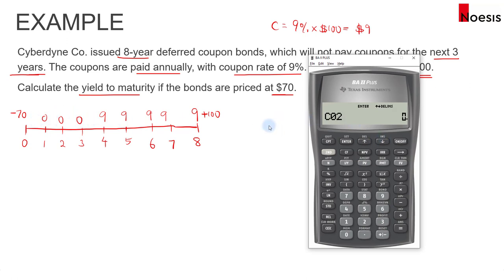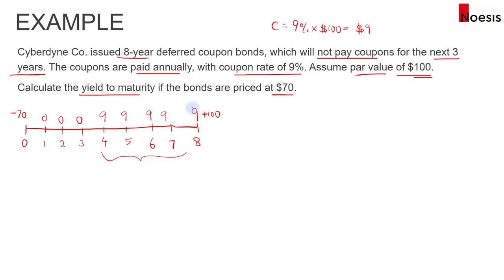For C02, I will enter 9. But the coupon of 9 only happens for 4 years, from year 4 to year 7. In year 8, the total cash flow will be 109, so we can't use that as the cash flow for C02.